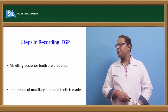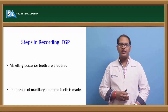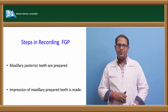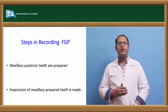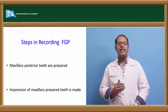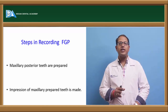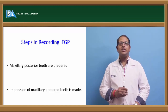Before going to the steps in functionally generated path, let's see the advantages. The first advantage is that it's very simple in fabrication and requires inexpensive instrumentation. It eliminates the need for adjusting an articulator with inter-occlusal record or a tracing device. It also eliminates the need of a face bow transfer. Minimum chair-side time is required, and it is an accurate and easy technique to learn.